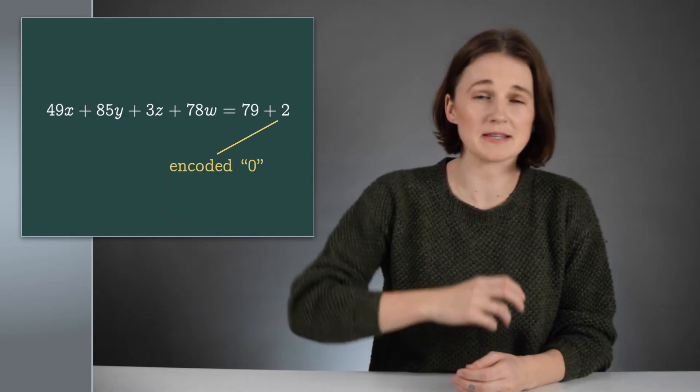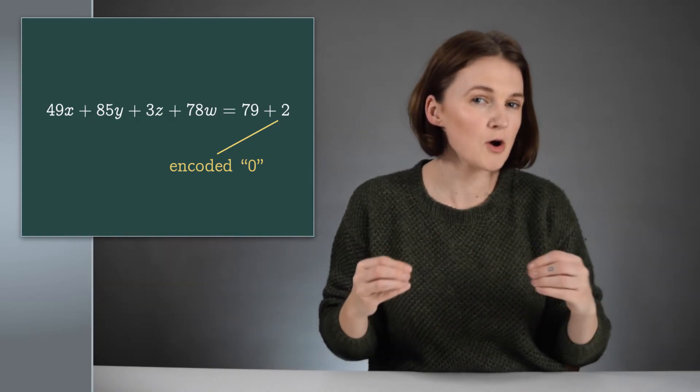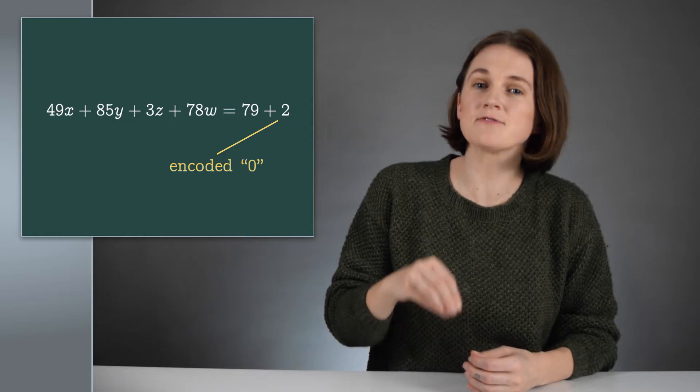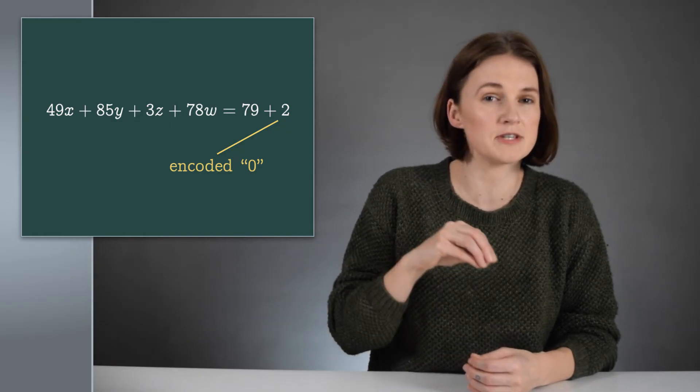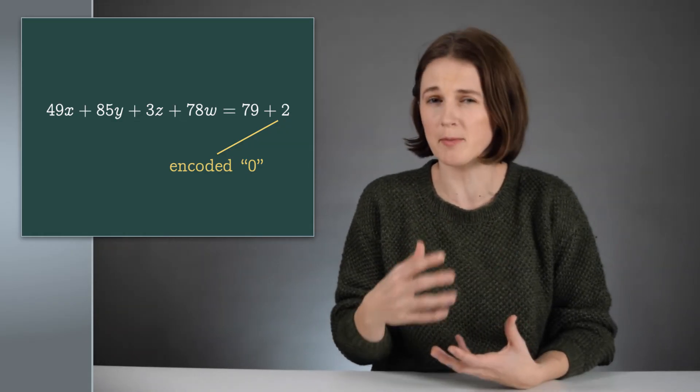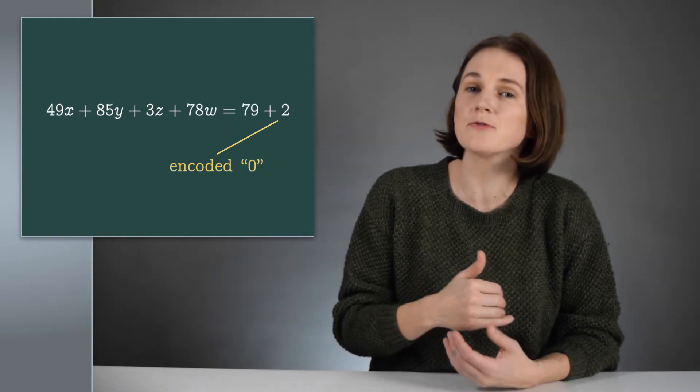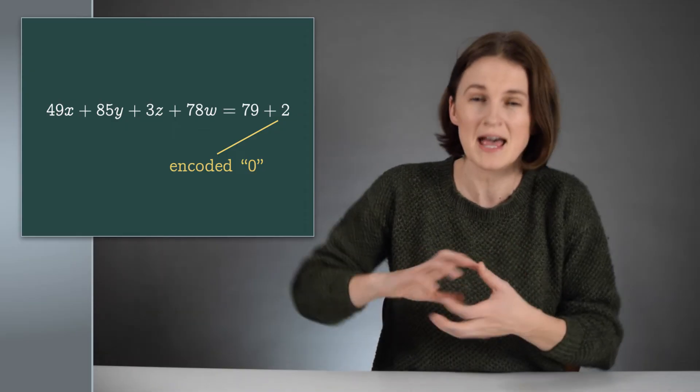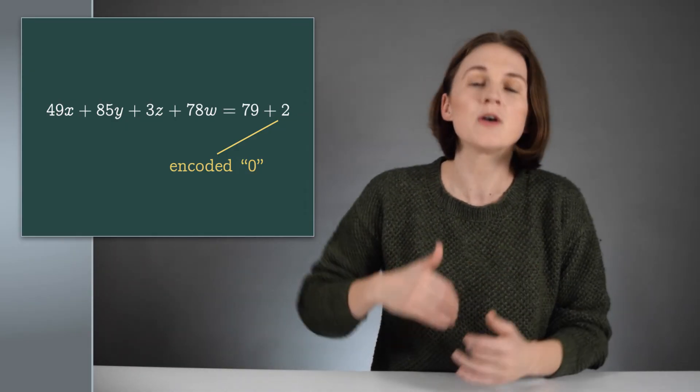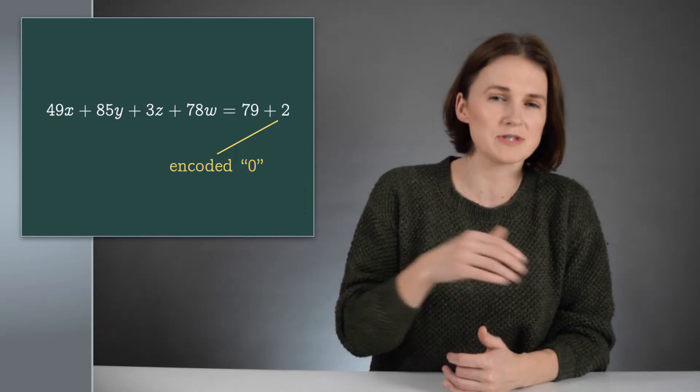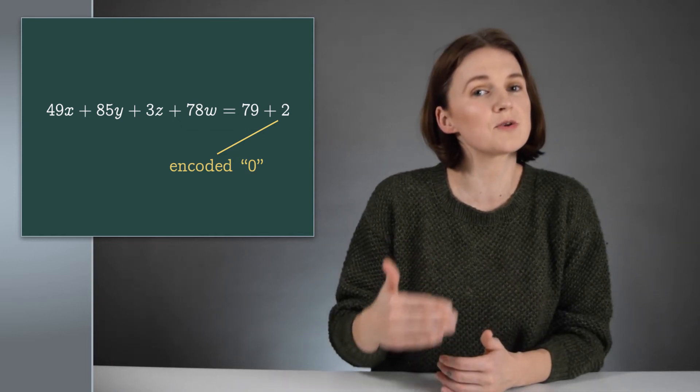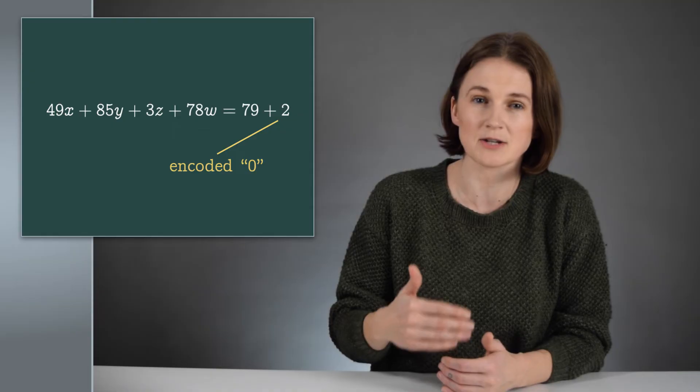Alice could easily separate the actual solution from the encoded bit, but an eavesdropper couldn't. Remember, it's very hard for someone to discover the secret vector using just the public information. And without the secret vector, there's really no way of knowing what the actual solution is and separating it out. So Bob was able to use this equation to encrypt either a zero or one in such a way that only Alice could reasonably detect which one it is.